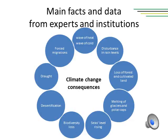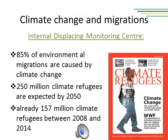If no radical change is implemented, we risk reaching a plus four degree temperature rise by 2100. Among the known consequences of climate change we can quote: the movement of climatic areas, heat waves and cold waves, disturbances in rain levels with less but more concentrated extreme weather events, loss of vast areas of forests and cultivated land, melting of glaciers and polar caps, rising sea levels, disappearance of thousands of hectares of coastal land, biodiversity loss, desertification, drought, and climate refugees. Between 2008 and 2014, 157 million climate refugees have already been recorded.